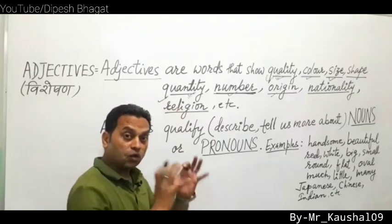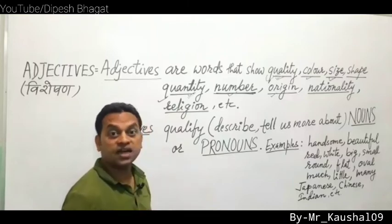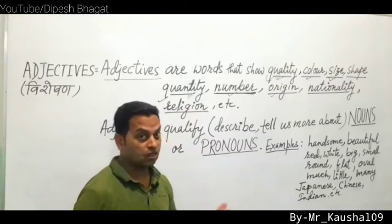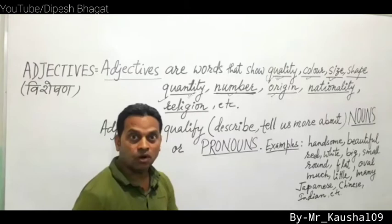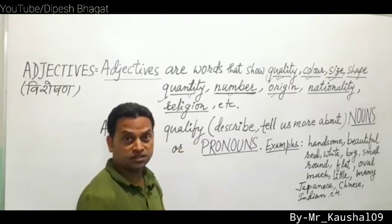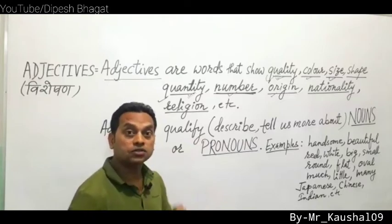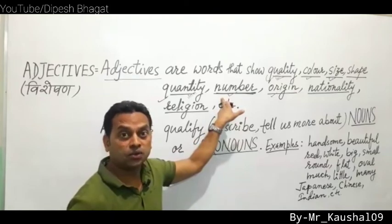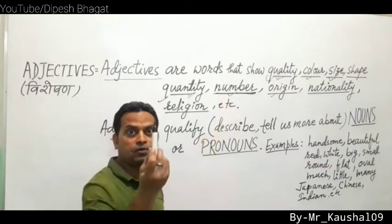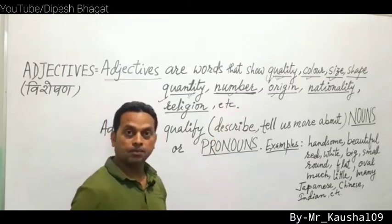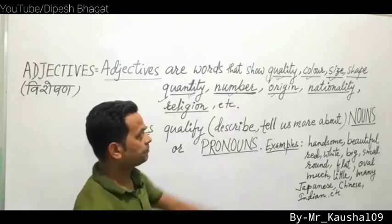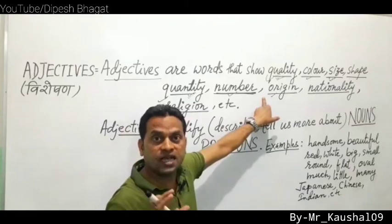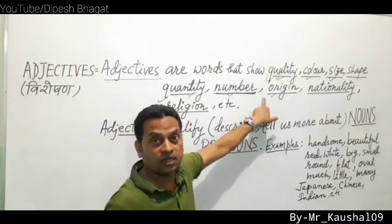Quantity adjectives: words that show the quantity or amount of things. For example: 'I have much rice' — much shows quantity. 'I have little milk' — little shows quantity. Number adjectives: 'I have five books,' 'I have three pens,' 'I have only one pen' — one, three, five, many, a lot of are adjectives of number.